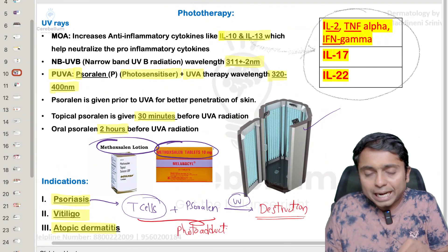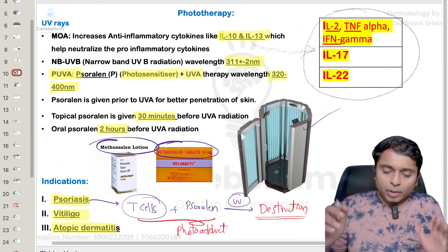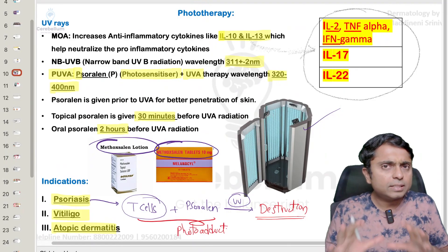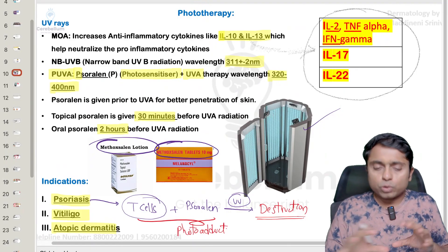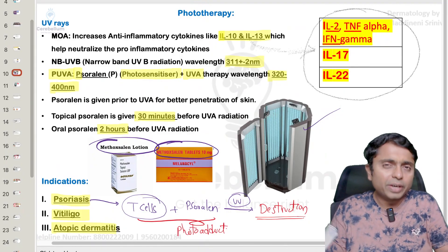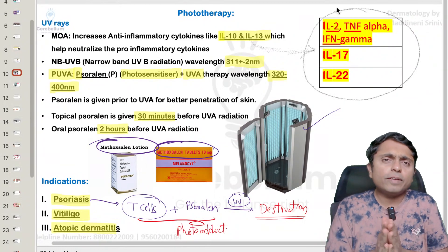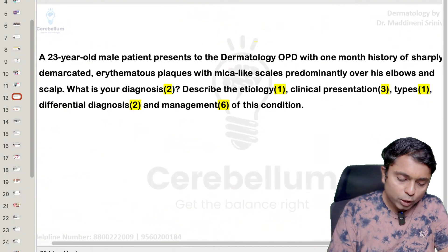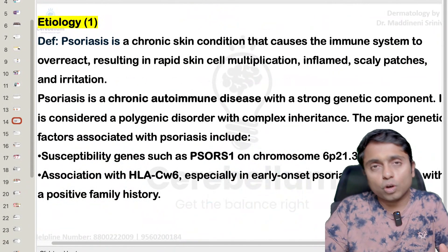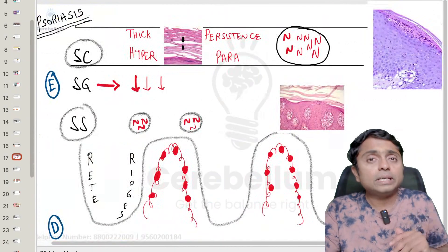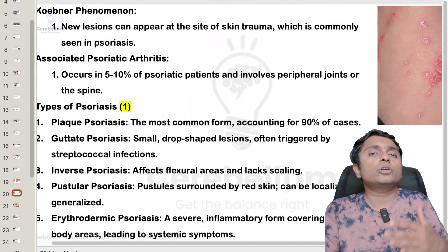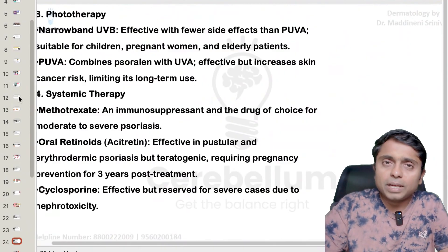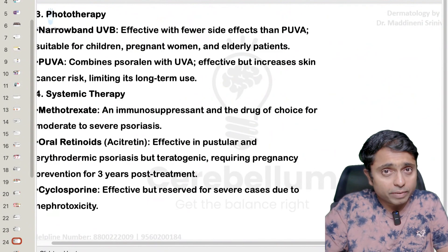One more mechanism related to phototherapy: it increases anti-inflammatory cytokines interleukin-10 and interleukin-13, and it neutralizes pro-inflammatory cytokines. This is all about PUVA therapy. If you write this much, you will comfortably get six or three marks depending on the question. If this video was helpful, please hit the like button, subscribe to my YouTube channel, and comment 'psoriasis' if you want me to make a video on that topic. Thank you so much — happy learning, all the best!